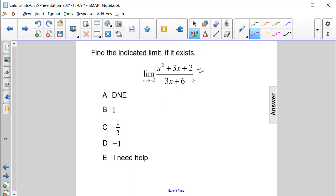Let's start off using direct substitution to see if it gives us the limit. So we have negative 2 squared plus 3 times negative 2 plus 2, and then we're going to divide that by 3 times negative 2 plus 6.